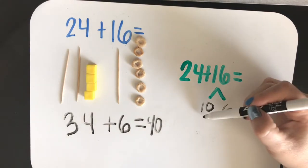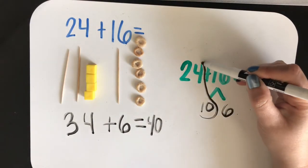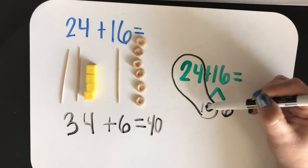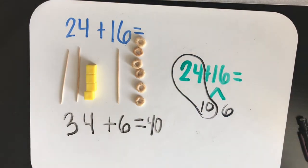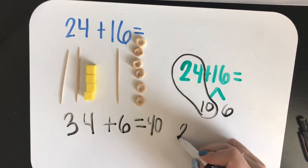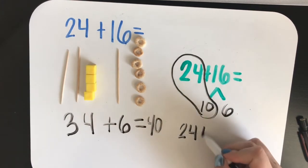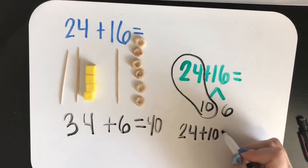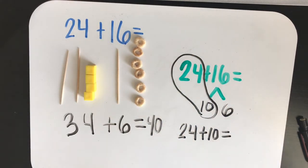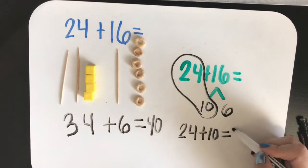Remember, you can circle the two numbers that you're going to add the ten to to remind yourself of what your first number sentence should be. Twenty-four plus ten equals good, thirty-four.